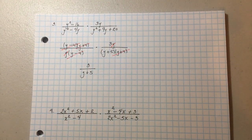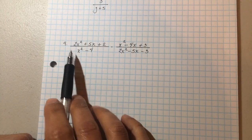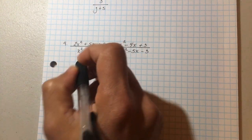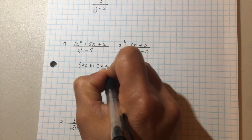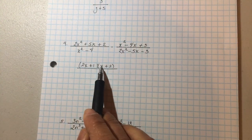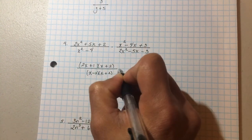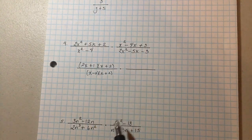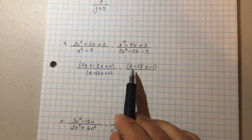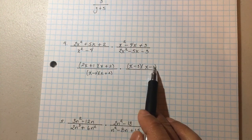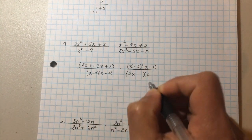Now this example has a two in the front — a little more complex but much the same. This top expression factors into two x plus one and x plus two. The bottom is a difference of perfect squares: x minus two times x plus two. On the top of the next fraction, factor into x minus three and x minus one — negative three times negative one gives positive three.